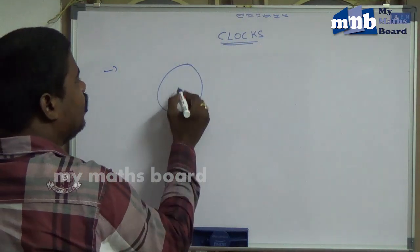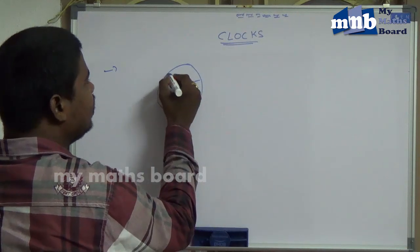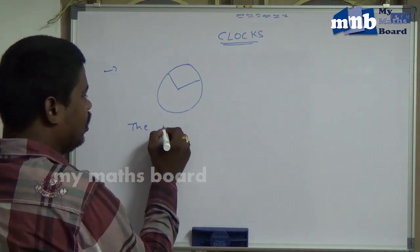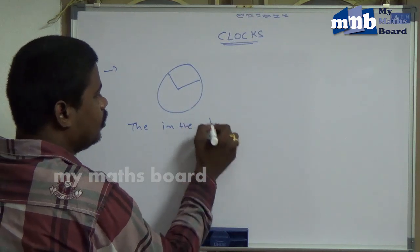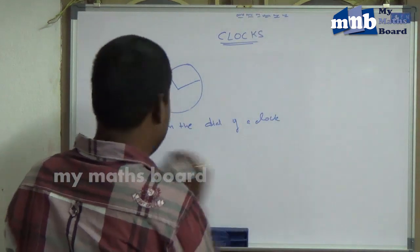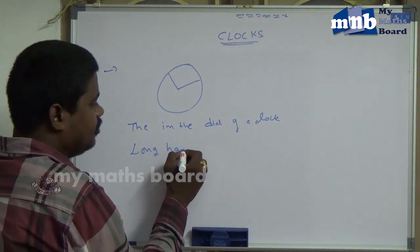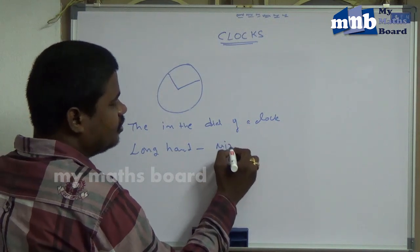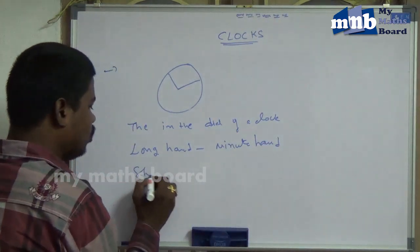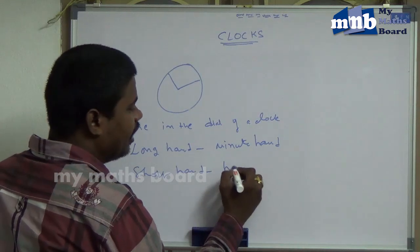In the clock, generally, we see two hands. The first hand is the hour hand and the second hand is the minute hand. The long hand is the minute hand and the short hand is the hour hand.